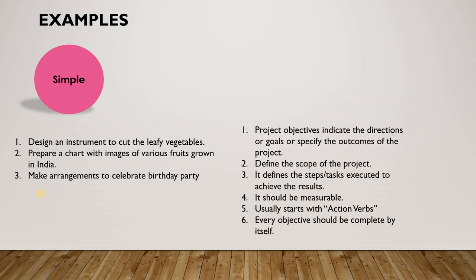Let's verify these written objectives against the characteristics — like a checklist. The project objective should indicate directions, goals, or specify outcomes. In the first case, it is clear that the instrument is used to cut leafy vegetables, and you are designing it. It defines the scope by saying you are doing this only to cut leafy vegetables. 'Design' means the end outcome will be some artifact that reviewers can test to see whether it is able to cut leafy vegetables or not — so it is measurable.